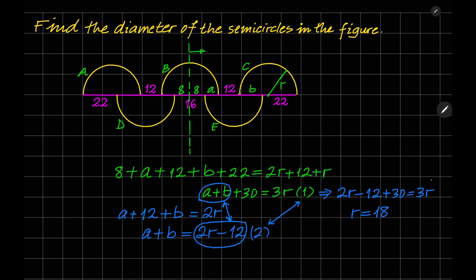You know that the diameter is equal to 2 times r, which is 2 times 18, which equals 36. That's the answer — this is the diameter of the semicircles. I hope it's clear. Please like and subscribe to my channel, thank you very much.